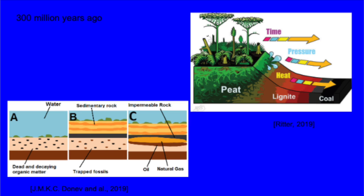Oil and gas, on the other hand, are formed when organic matter falls to the bottom of oceans and decomposes. Sedimentary rock piles on top and forms lots of pressure. That pressure over time forms oil and gas.